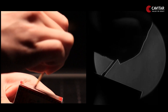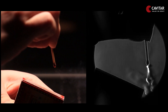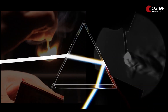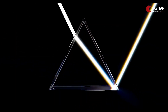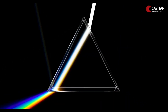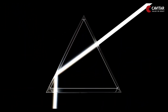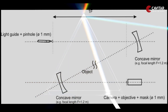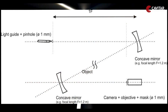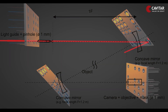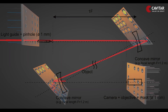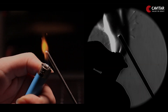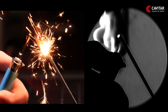Schlieren imaging is designed to detect changes in the refractive index of objects. When a beam of light passes through a refractive index gradient, it bends or refracts — which is invisible to the naked eye. However, using suitable methods such as Schlieren imaging, these deflected rays can be visualized even by a normal camera.